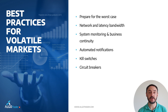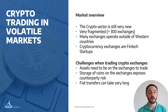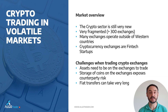Here are a few recommendations on how to trade cryptocurrencies in volatile markets. But let's start with a cryptocurrency market overview. The crypto sector is still very new, it's very fragmented. There are over 300 exchanges today. Many of these exchanges operate outside western countries and avoid regulatory oversight. Cryptocurrency exchanges are typically privately held companies — they're just startups. So you cannot compare them to highly regulated exchanges like the New York Stock Exchange or NASDAQ. Assets need to be on the exchanges to trade. Also, storage of coins on the exchanges exposes you to counterparty risk. Many exchanges got hacked in the past, all the way from Mt. Gox to Binance.